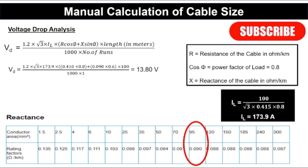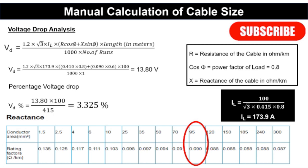The percentage voltage drop is: VD% = 13.80 × 100 / 415 = 3.325%, approximately 3%. If your load operates correctly at this voltage drop, or if your client accepts it, then the cable size of 95 mm² is acceptable. If not, you need to increase the cable size to reduce the voltage drop. This will be demonstrated in the next lecture using the Excel sheet and ETAP, where increasing or decreasing the allowable voltage drop percentage changes the cable size accordingly.